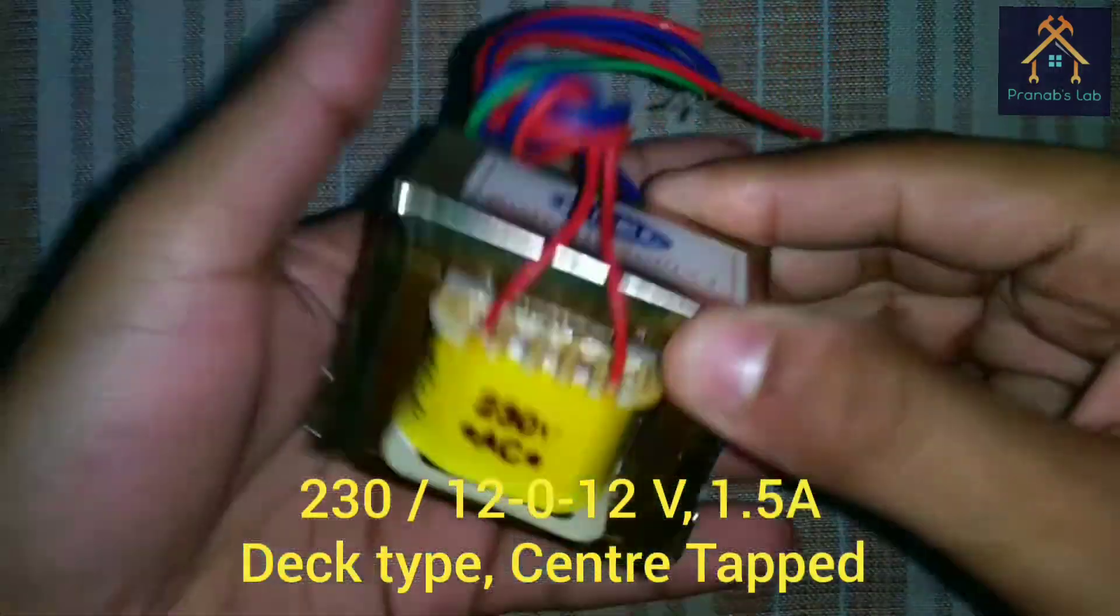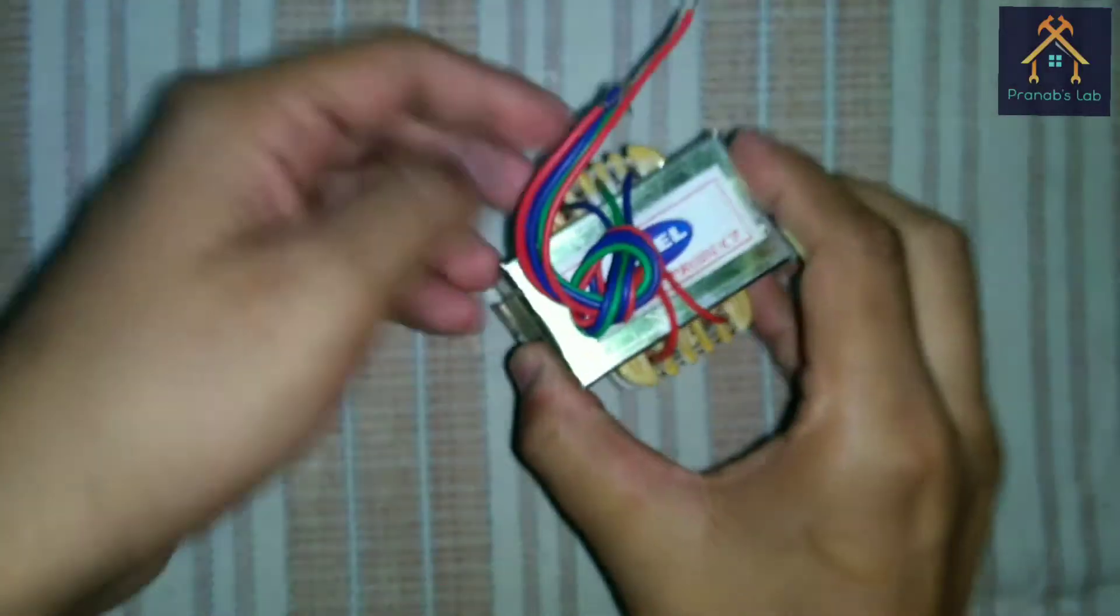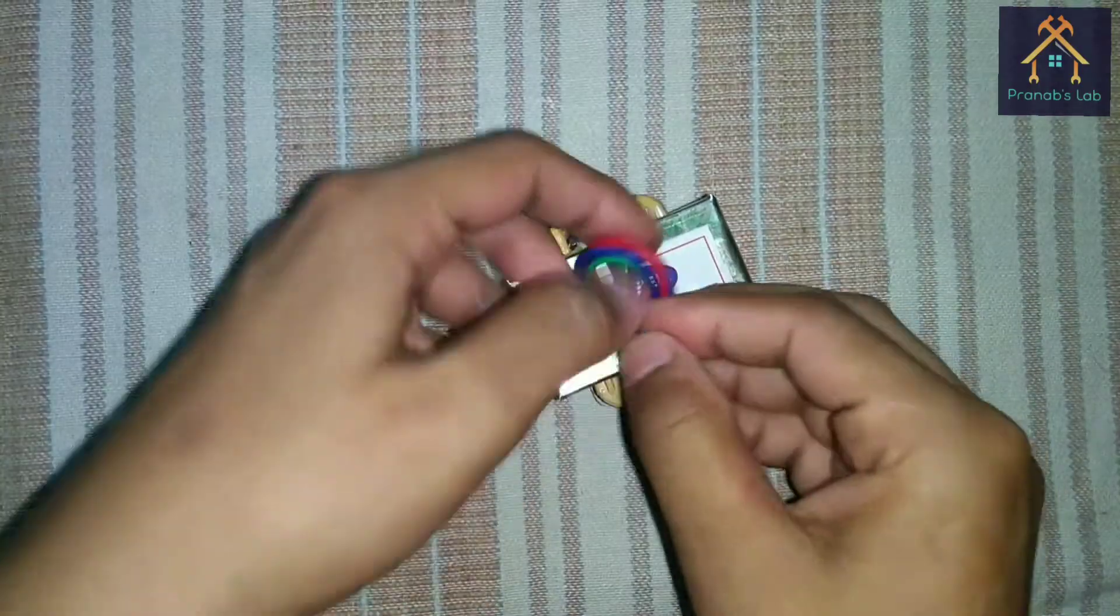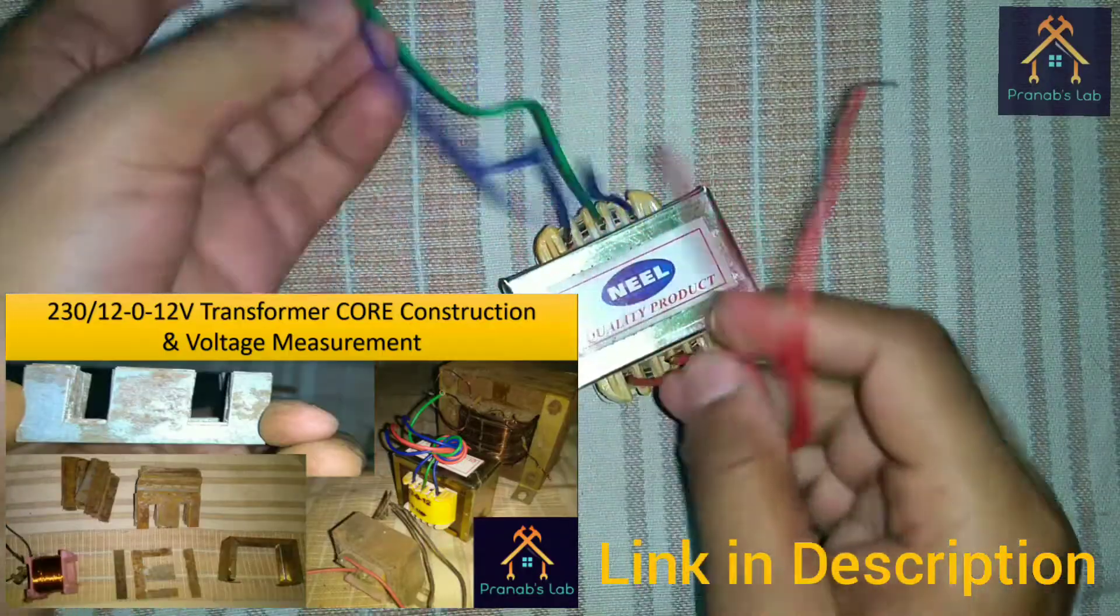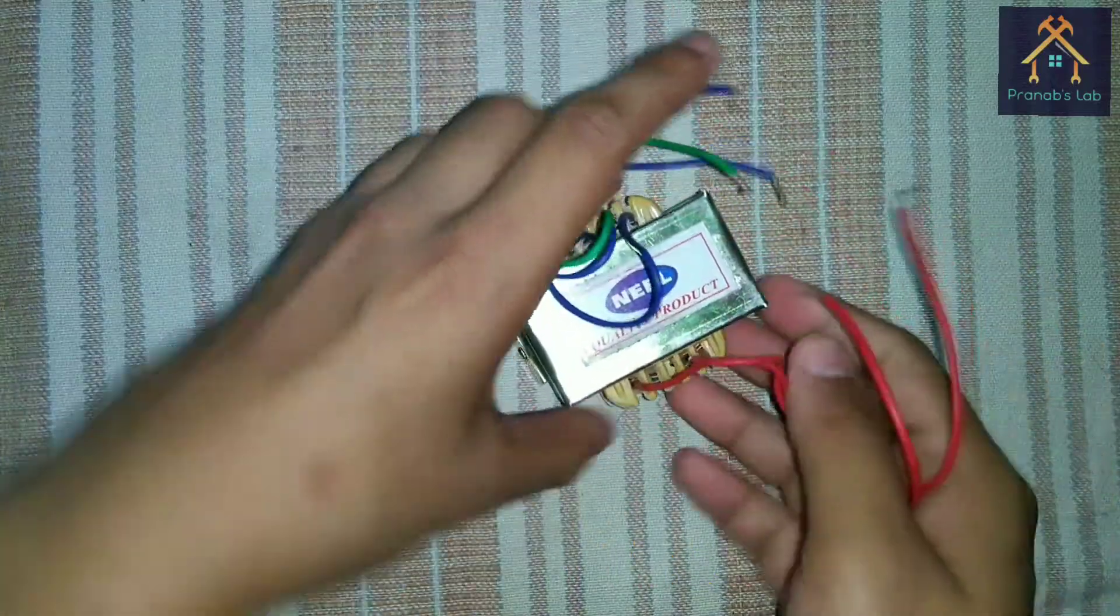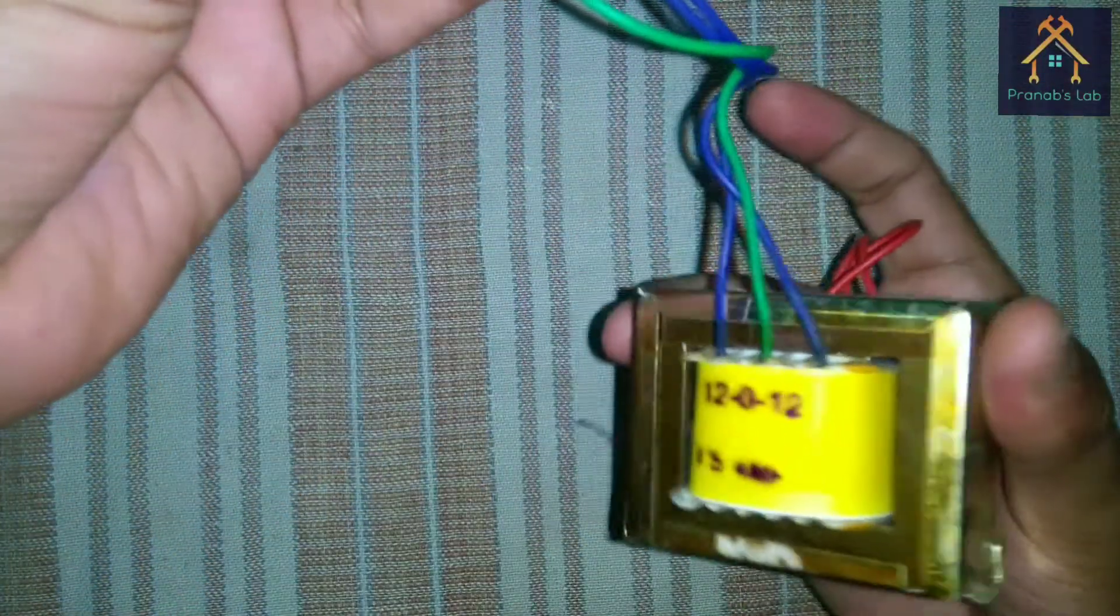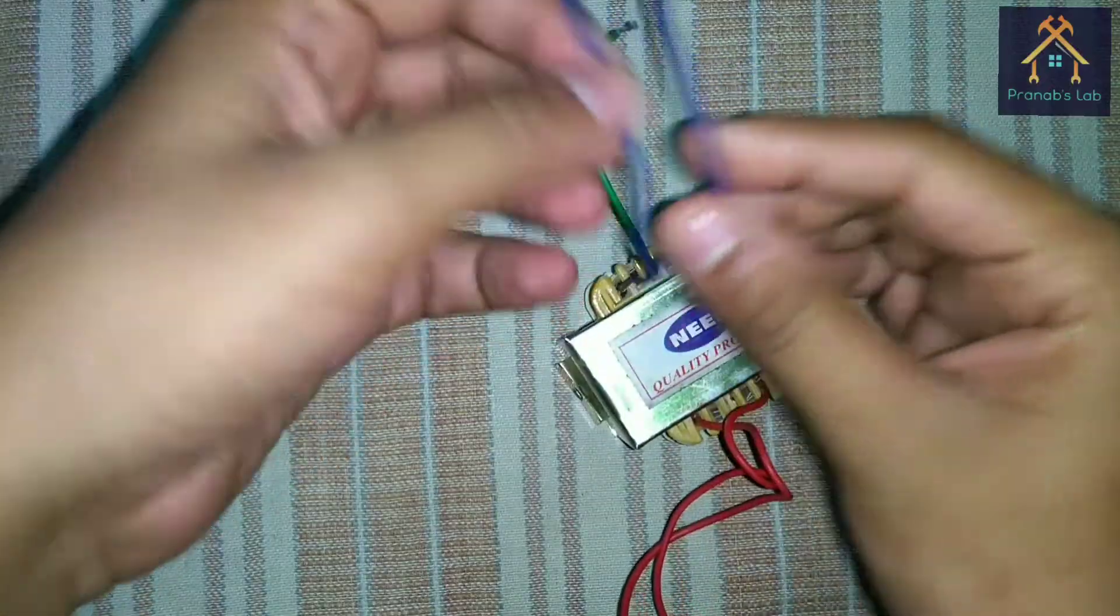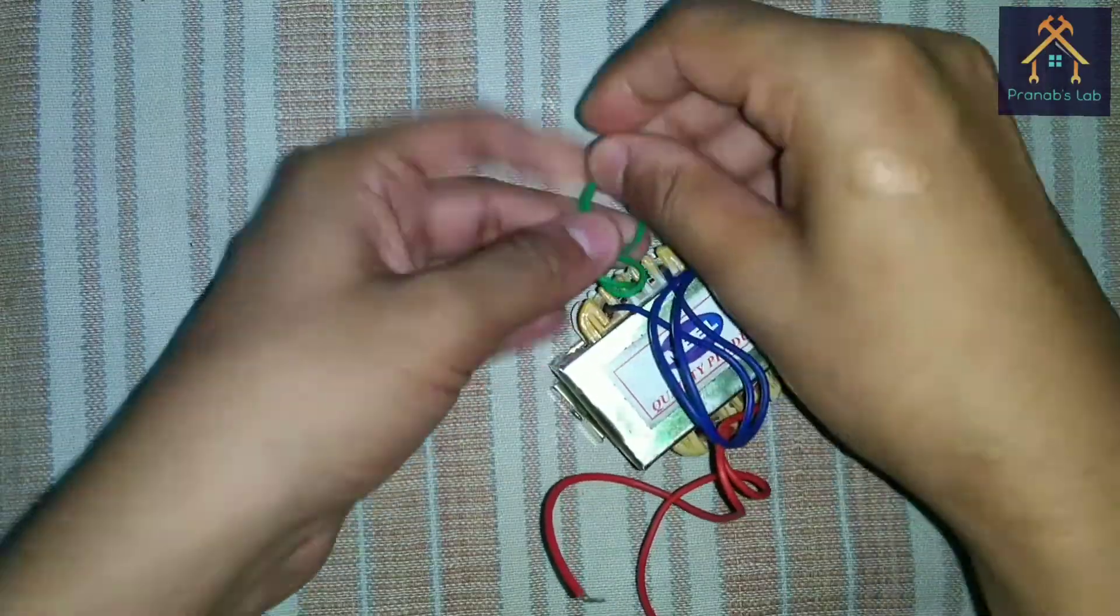This is a 230V by 12-0-12V, 1.5A deck type center tap transformer. We will test the polarity of this transformer. I have already shown the parts construction and voltage measurement of the transformer in previous video. These red wires are the primary winding terminals and these are the secondary winding terminals. We will take 24V output from these two blue wires and the center tap terminal, that means the green wire, is ignored.